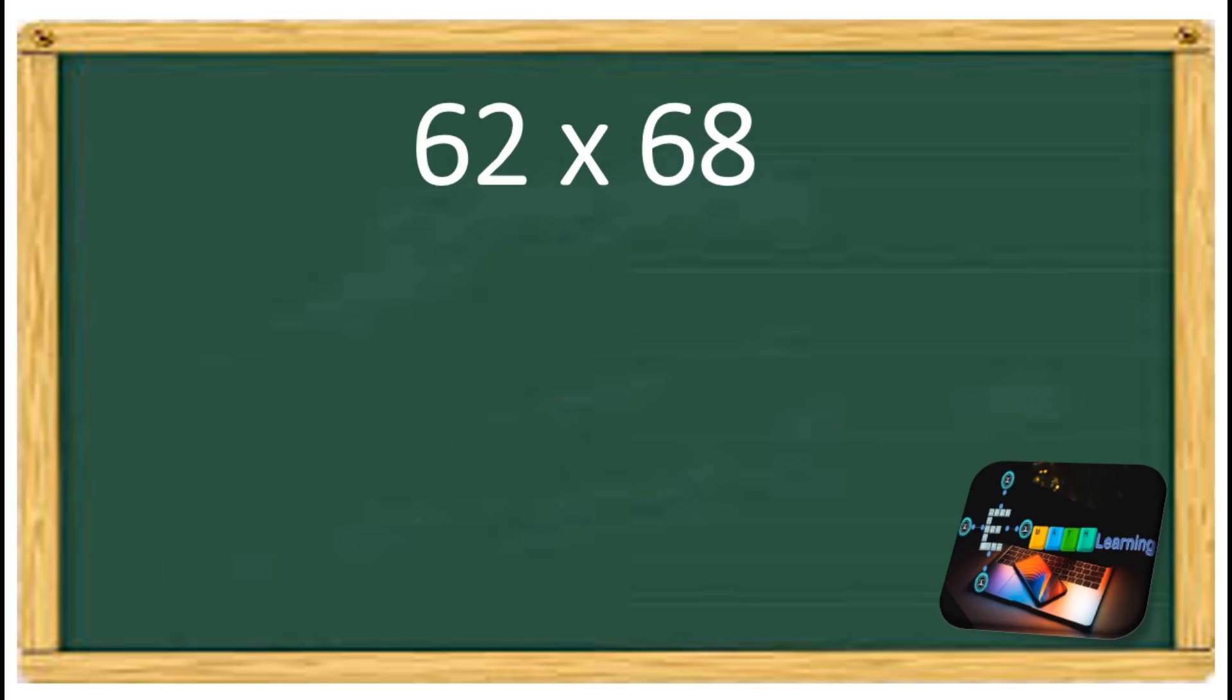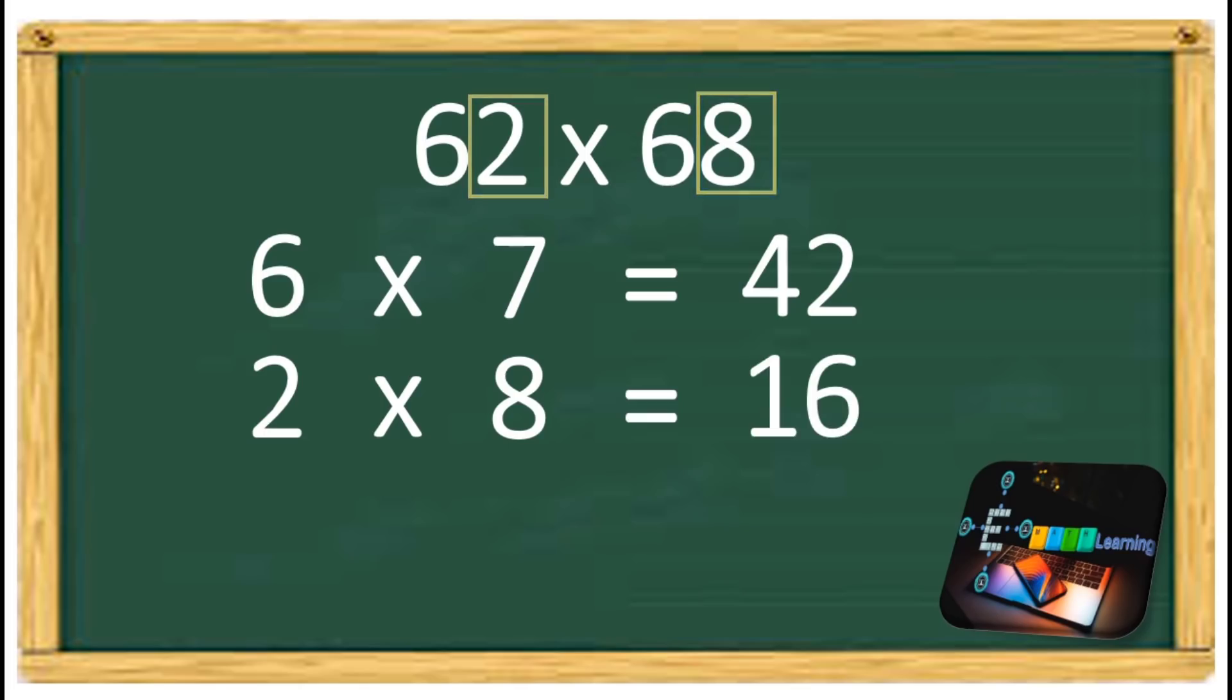Every time you see this, take the tens digit and multiply it by the next higher number. 6 times 7 equals 42. Next, multiply the ones digits. 2 times 8 equals 16.